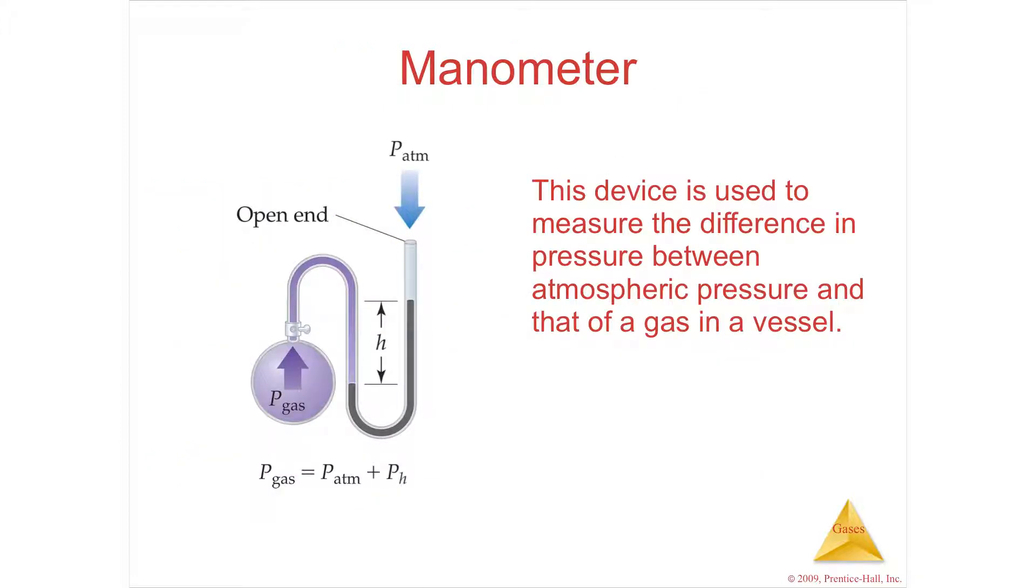Normally in the lab, if you want to study pressures of gases, you use a manometer, and there are a couple types of manometers. If you have a gas filling a vessel and it's open to a plug of mercury, the mercury is free to move, just like it does in a barometer. An open-ended manometer is open to the air pressure.